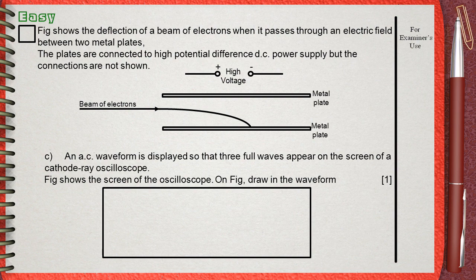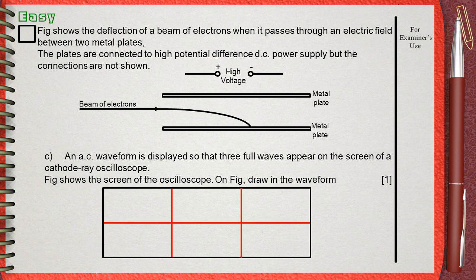Let's divide the screen into three equal parts for three successive waves. Let's also divide the screen horizontally to draw the positive part of the wave above the center line and the negative part of the wave below the center line.